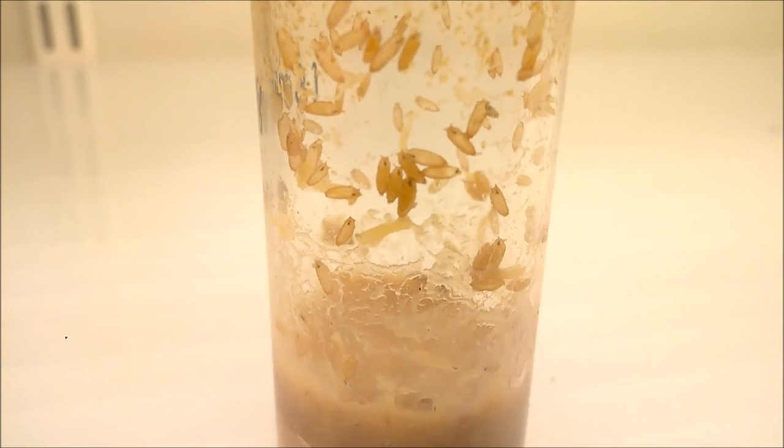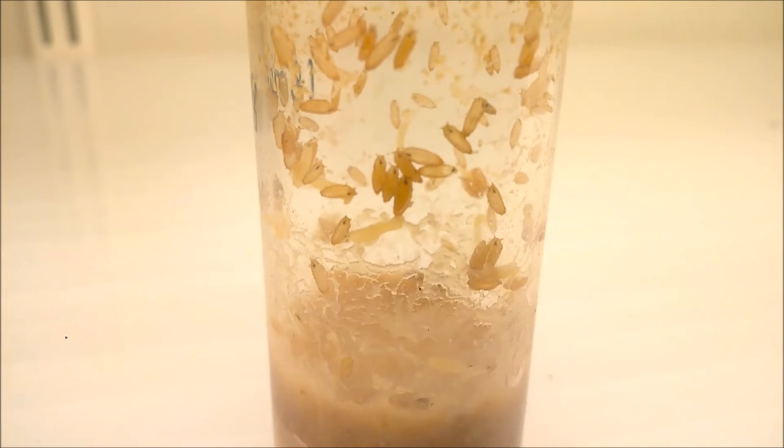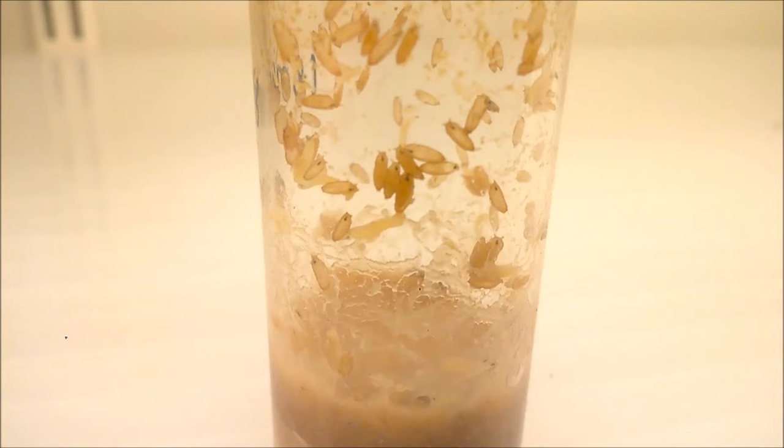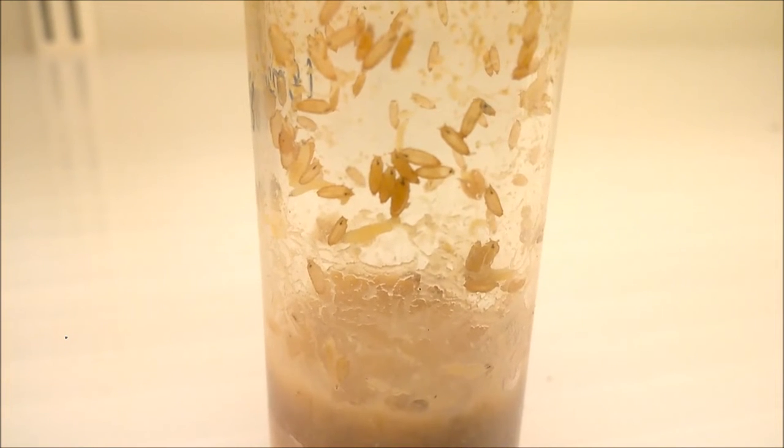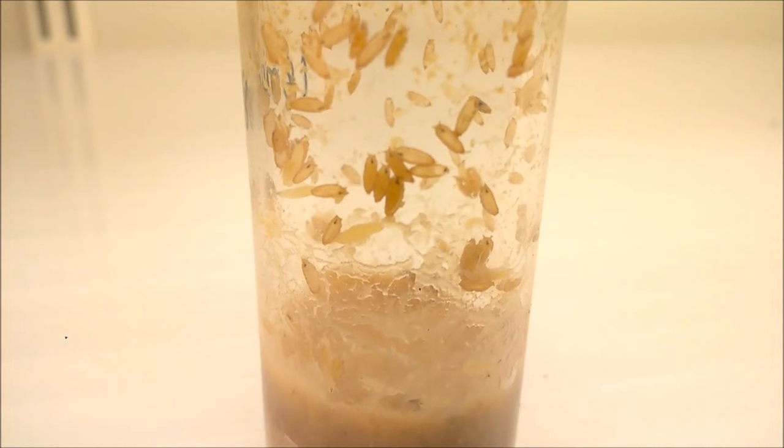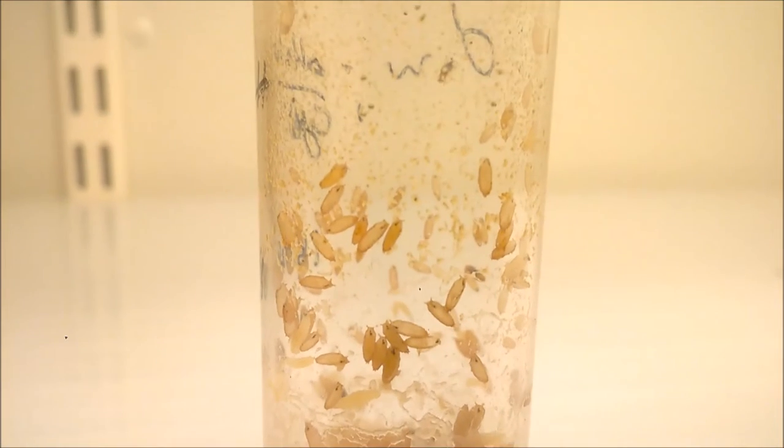After mating, females will deposit in the food provided in the bottom of the vial. Larvae will hatch from eggs, soon after they will start feeding. They will grow and they will pupate, as you can see over here.